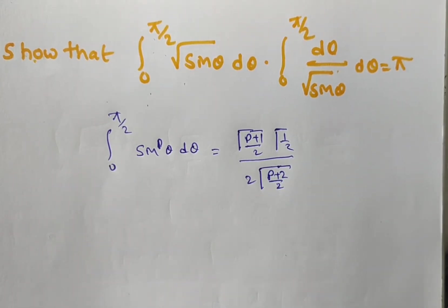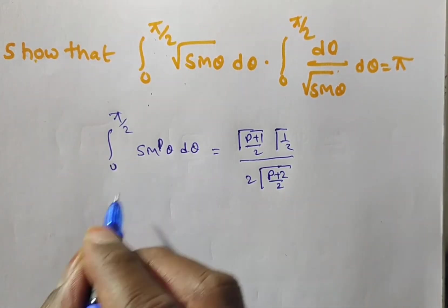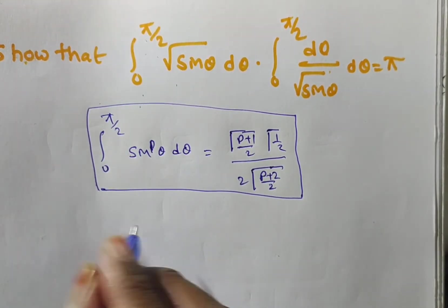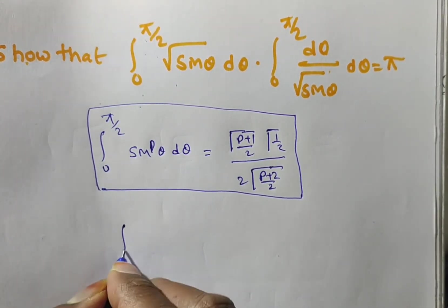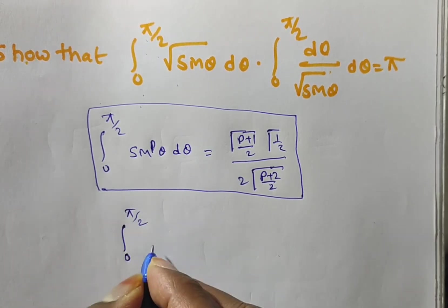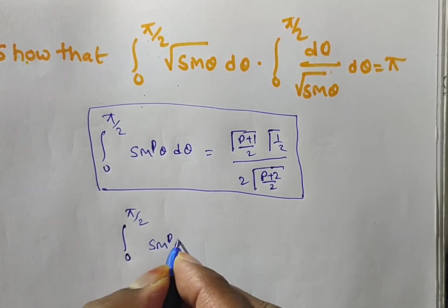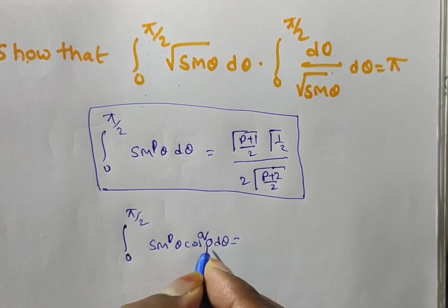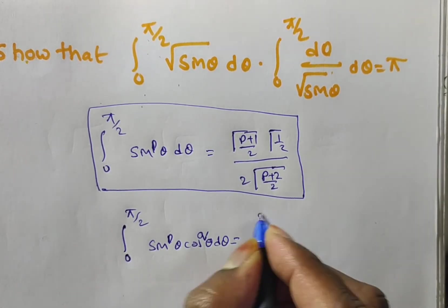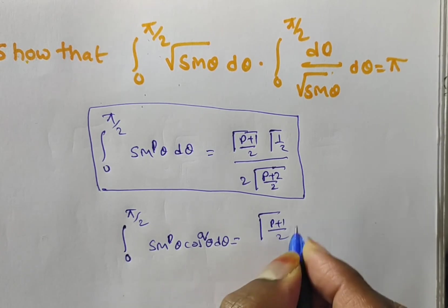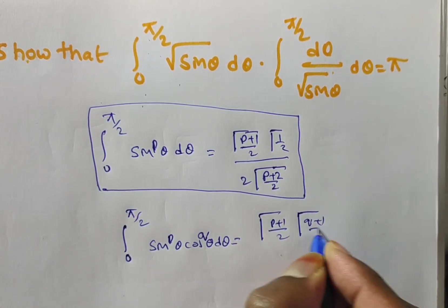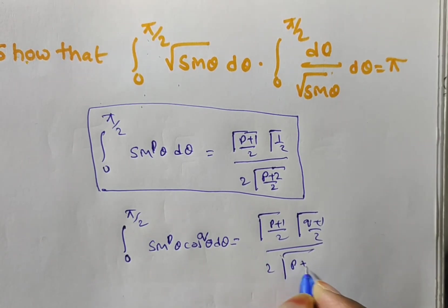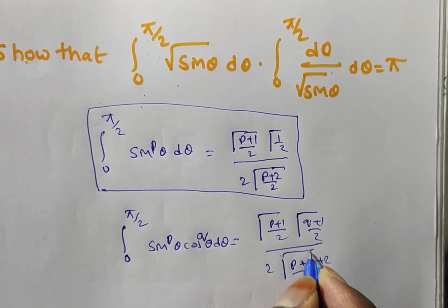You have to remember this formula. If you know this formula, then only you can solve. We have the general formula: integral from 0 to π/2 of sin^p(θ) cos^q(θ) dθ equals γ((p+1)/2) · γ((q+1)/2) divided by 2 · γ((p+q+2)/2).